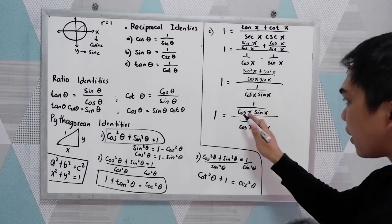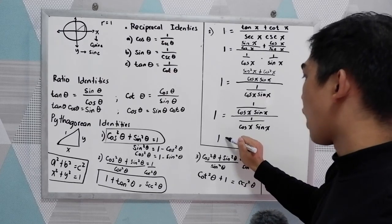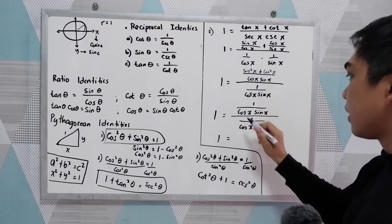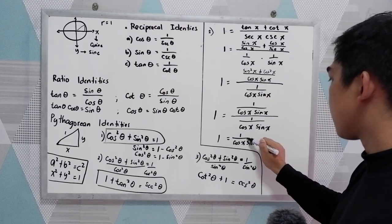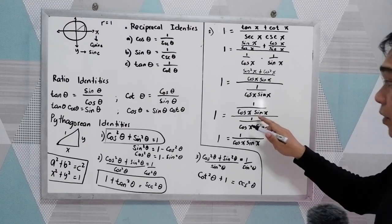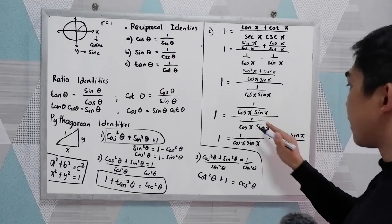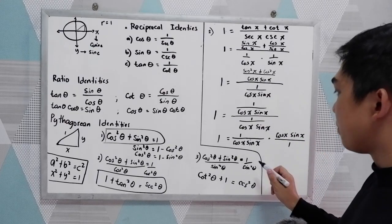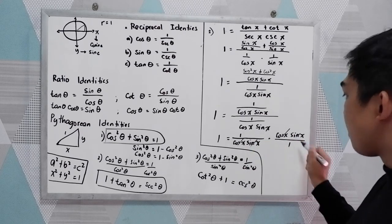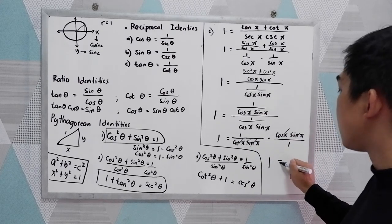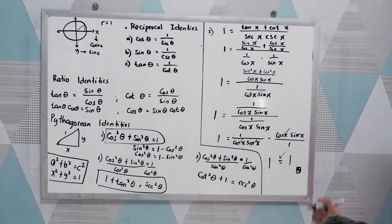We have a fraction over a fraction. So: 1 = [1 / (cosine x · sine x)] times [cosine x · sine x / 1]. From Pythagorean identities, sine²x + cosine²x = 1, so the numerator becomes 1. We can cancel cosine x with cosine x, and sine x with sine x, and 1/1 = 1. So we have 1 = 1. Proven.